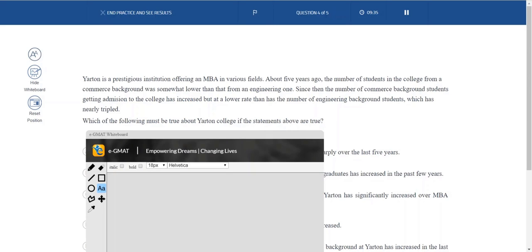So what do we know? Yarton is a prestigious institution offering an MBA. Five years ago, the number of students from a commerce background was somewhat lower than that from engineering. Since then, the number of commerce has increased but at a lower rate than the number of engineering, which is nearly tripled. Which of the following must be true about Yarton College if the statements above are true? So it's a classic inference question.